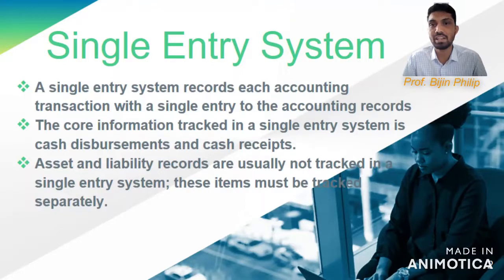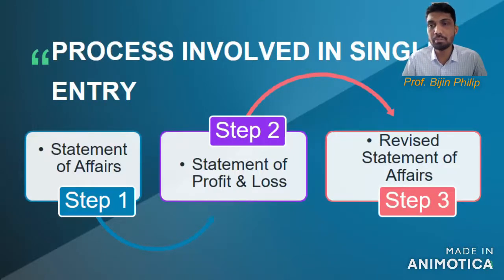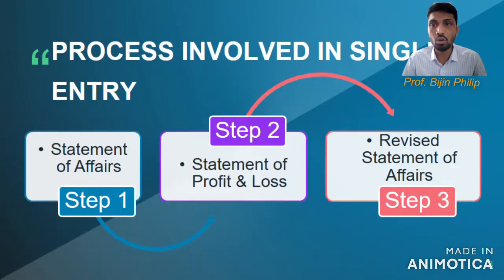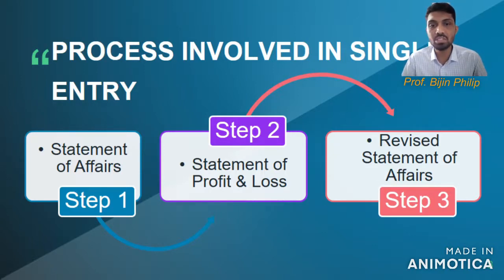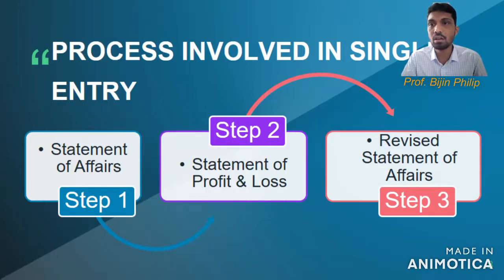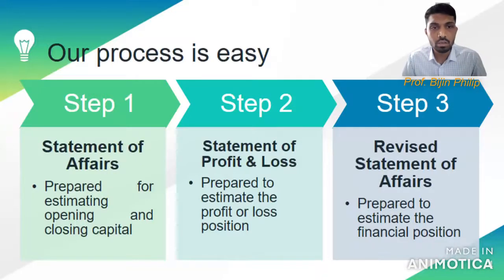Next we will be discussing what processes are involved in a single entry system. There are three steps involved. The first step is the preparation of a statement of affairs, the second step is the preparation of a statement of profit and loss, and the third step is the revised statement of affairs.